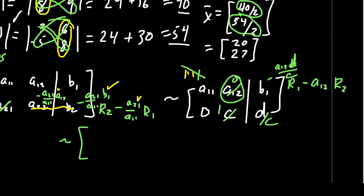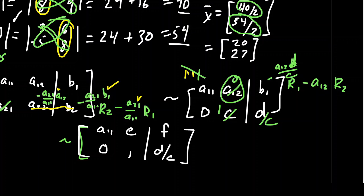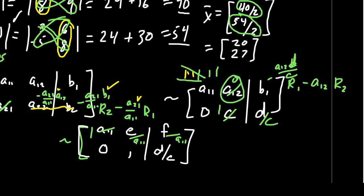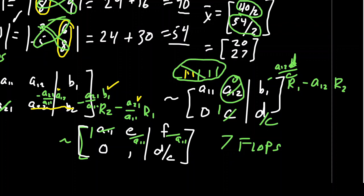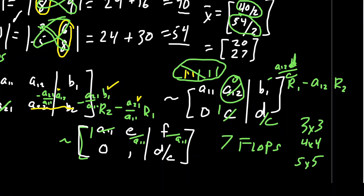For the last step, dividing to get a leading 1 for x₁ requires dividing two entries by a₁₁ — that's 2 more flops, bringing the total to 7 flops. So row reduction costs about 7 flops versus Cramer's Rule at 8 flops for the 2×2 case — a slight advantage to row operations, but not dramatic at this size.